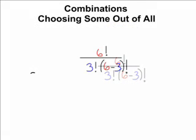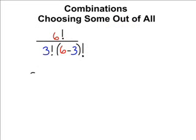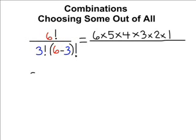Now the exclamation point in math means it's a factorial so you just simply take the number and multiply backwards all the way to the number one. So for the numerator we're going to take six factorial and multiply all the way down to one. So six times five times four times three times two times one, although the one is actually unnecessary when doing a factorial.